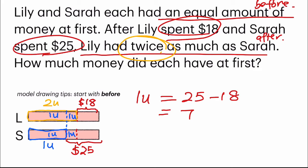So after knowing 1 unit, we have no problem solving the question because they want to know how much each of them have at first. I can use Sarah, I can use Lily. Both methods work. So let's try finding Lily. Lily has 2 units. So 2 units, 7 times 2, because 1 unit is 7.